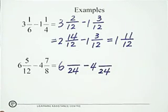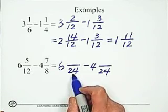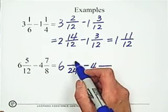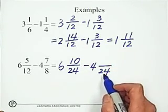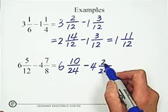24, find its equivalent. 12 to 24, multiply 2, so multiply 2 to the 5, become 10. 8 to 24, multiply 3, so 21.